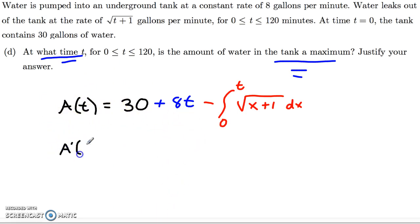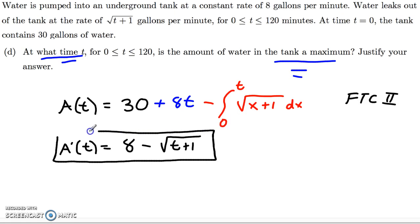Well, A prime of t, the derivative of 30 is 0. It's a constant. The derivative of 8t is 8. Minus, now the derivative of this, hopefully you see FTC2 popping up here. This is the second fundamental theorem of calculus. If I'm going to take the derivative of this integral, all I need to do, since this is just a constant to a variable, I'm going to swap it out. So minus the square root of t plus 1. And this is my function that gives me the derivative of the amount of water in the tank. This is the rate at which the water in the tank is changing.